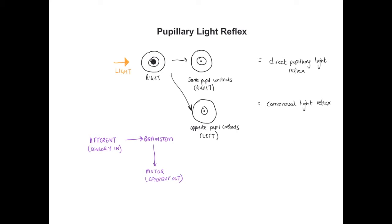Two cranial nerves are responsible for the pupillary light reflex. The optic nerve — cranial nerve 2 — senses the light stimulus. The sensory signal detected by photoreceptors in the retina relays the stimulus to the brainstem, and the motor or efferent signal is relayed via the parasympathetic fibres associated with the oculomotor nerve, cranial nerve 3. Because this is a reflex, it's not under conscious control — it's the autonomic parasympathetic fibres of the oculomotor nerve that drive iris contraction to constrict the pupil.